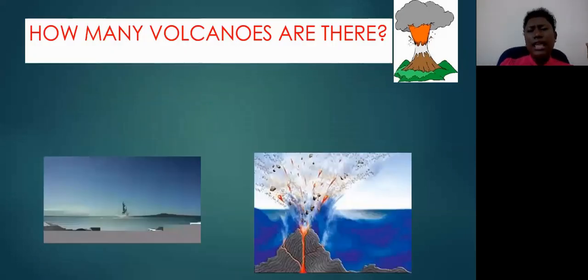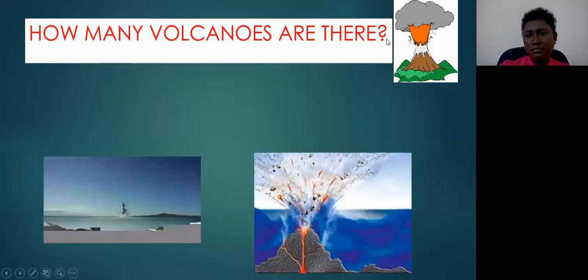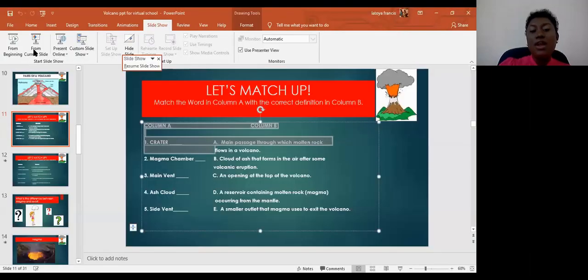How many volcanoes are there on Earth? Students guessed over 100, over 500, over 700, over 1,000. There are actually more than 1,500 volcanoes on Earth.